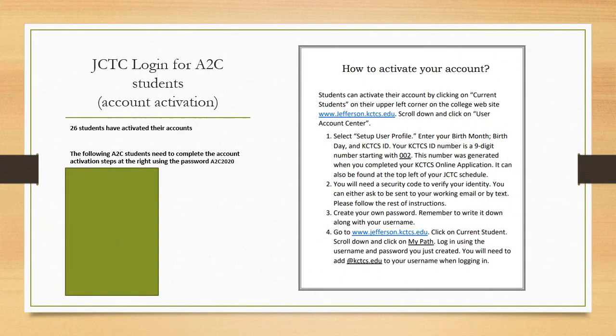For login: there are 26 students who have currently activated their accounts and about 10 students who need to activate their accounts using the password A2C2020. You can activate your account by clicking on current students, scrolling down and clicking on user account center, and selecting set up user profile. Enter your birth month, birthday, and your KCTCS ID as you received it when you originally completed your application — it can also be found at the top left of your JCTC schedule. You'll need a security code to verify your identity, which you can send to your email or text. Make a password, then go to jefferson.kctcs.edu, click on current student, go to My Path, and log in with the username and password you just created.